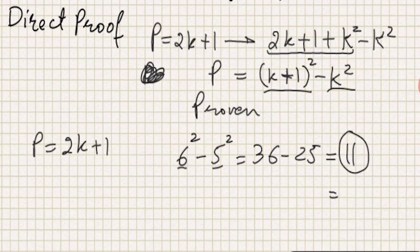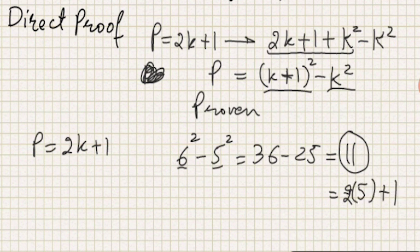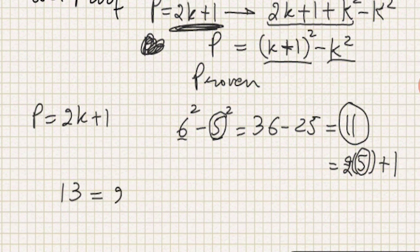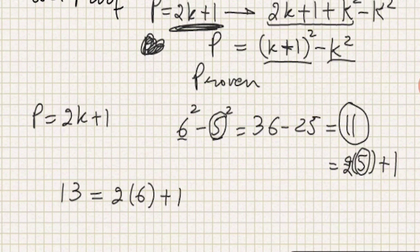If I write 11 in another form, I can write it as 2(5) + 1, which is the format 2k + 1. I can see there's a 5 here. Let me take 13, I can write it as 2(6) + 1, so 12 + 1 is 13.